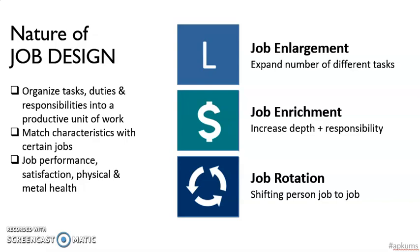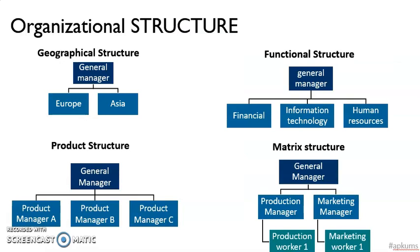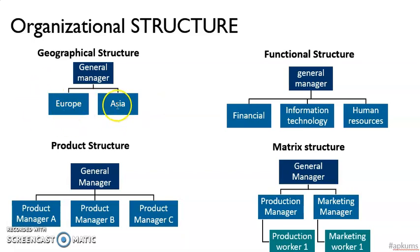Another important thing under organization is to determine the organizational structure of the company. There are four commonly used structures. The most common is the functional structure, in which each department is divided based on the function they perform — for example, the financial department, information technology department, human resources department, and production department. The company can also determine structure based on geographical position, such as a European branch and an Asian branch. Or the structure can be based on the products produced — for example, one team to take care of product A, another for product B, and another for product C.